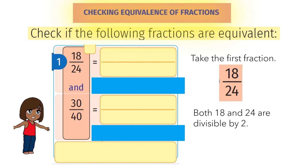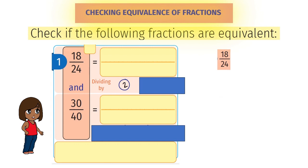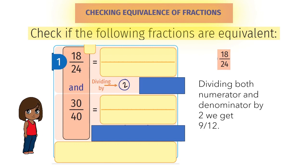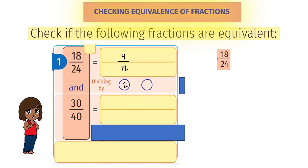The first fraction is 18 by 24. Both numerator and denominator divided by 2 gives us 9 by 12. Again, both divided by 3 gives us 3 by 4.